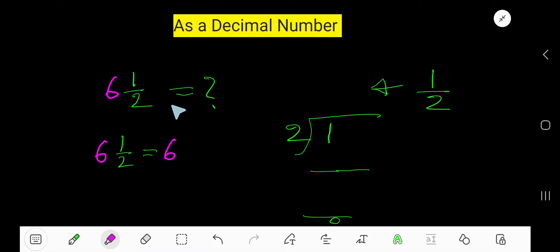Six and a half as a decimal. The whole number part doesn't change in both systems, so the fractional part will be changed into decimal. How to do that? Divide one by two. Two goes into